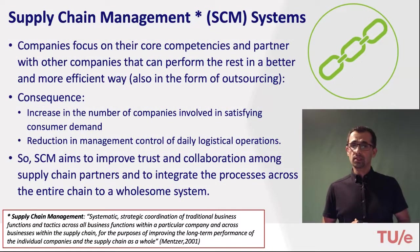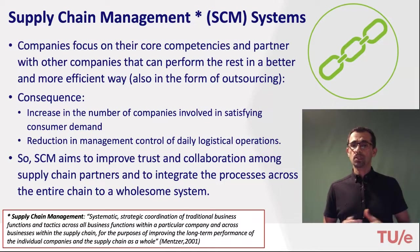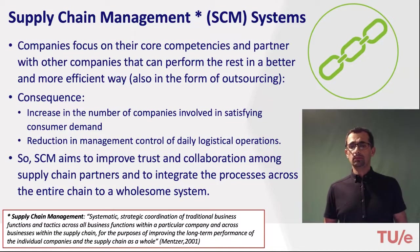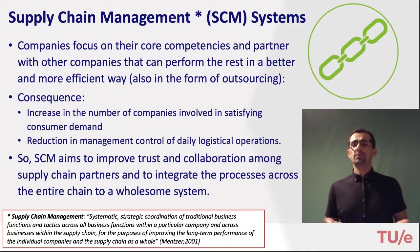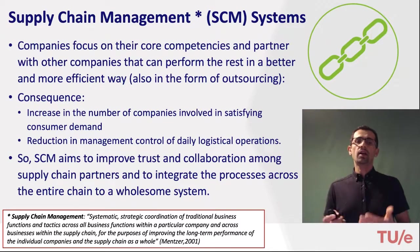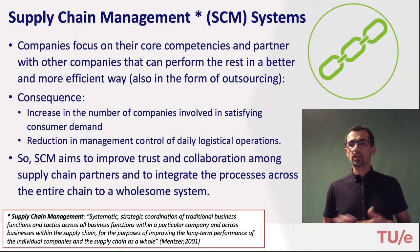Another type of enterprise system — in fact an inter-organizational system — is the supply chain management system. In the modern business world, companies should focus on their core competencies and partner with other companies that can perform the rest more efficiently. For example, as a manufacturing company you don't handle distribution and delivery of goods yourself; you partner with a logistics company that benefits from economies of scale and is likely more efficient at distribution.